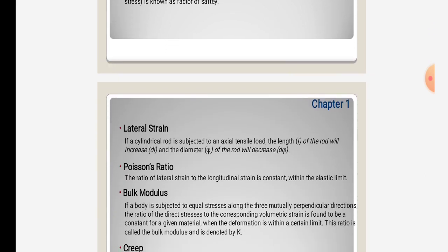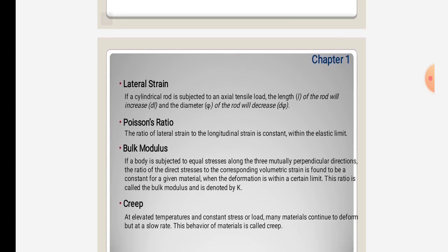Lateral strain: if a cylindrical rod is subject to an axial tensile load, the length of the rod increases and the diameter decreases. Poisson's ratio: the ratio of lateral strain to longitudinal strain is constant within the elastic limit. Bulk modulus: if a body is subjected to equal stresses along three mutually perpendicular directions, the ratio of direct stress to corresponding volumetric strain is constant for a given material. When deformation is within a certain limit, this ratio is called bulk modulus and denoted by K.